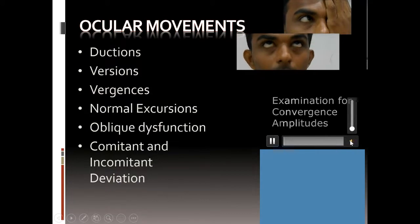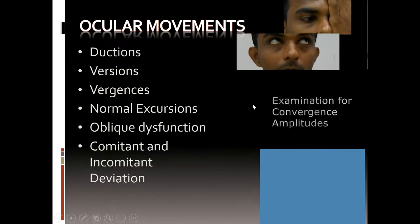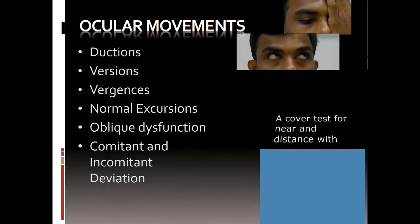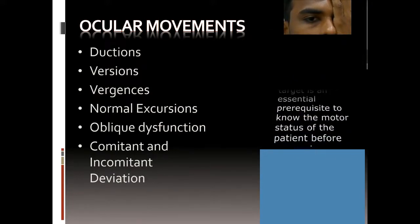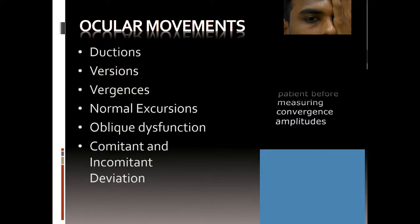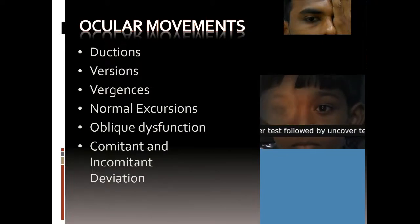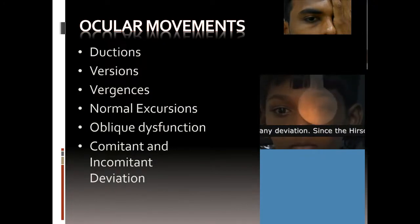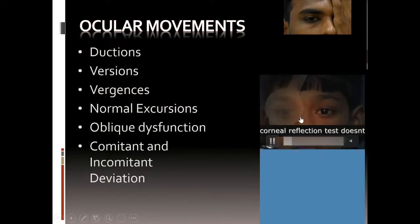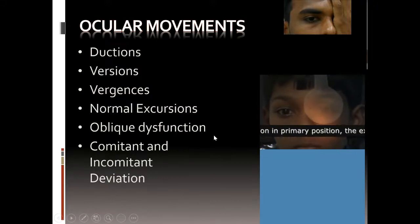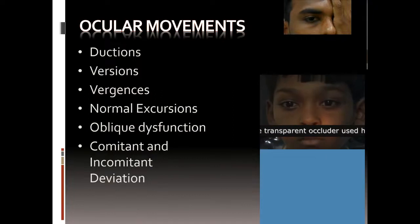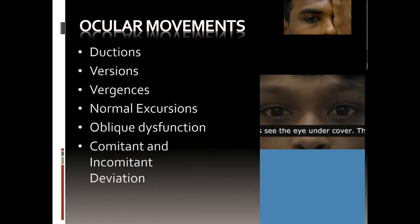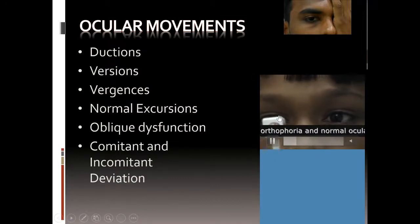A lot of times I am asked about measuring fusional amplitudes, and this is a constant problem with our teaching — we don't teach how to measure them. This is very important because you get people for fitness to measure their convergence and divergence amplitudes, and it is actually very easy even though we don't get a lot of patients. This particular patient has no deviation. You can measure his fusion by synaptophore or by prisms; by prisms you are measuring in free space, which is more physiological. To measure convergence, you start putting base-out prism in front of one eye until he starts seeing double or an eye deviates.